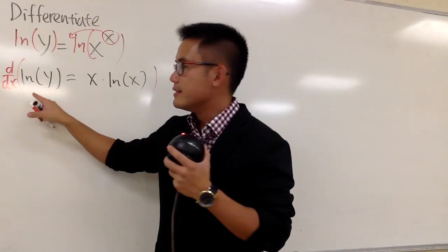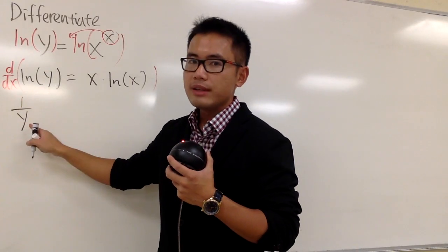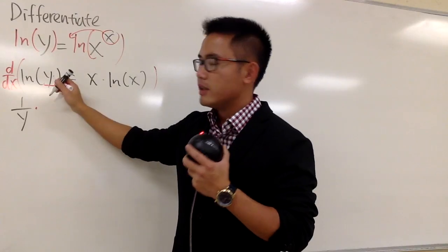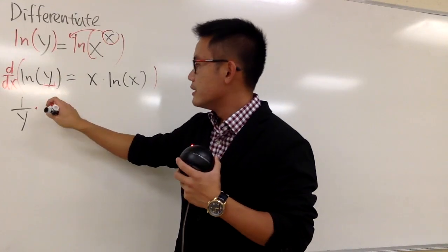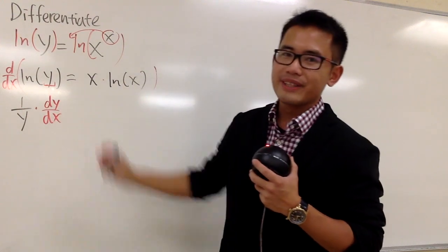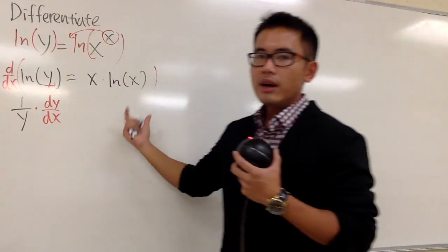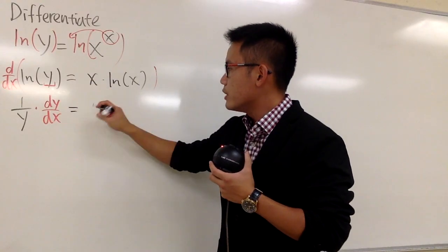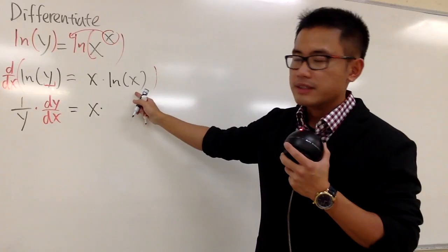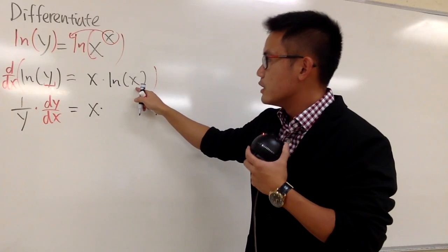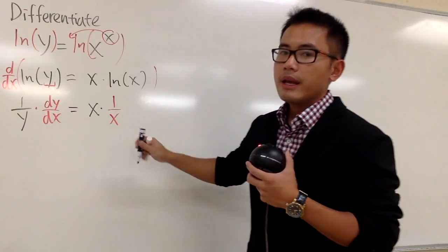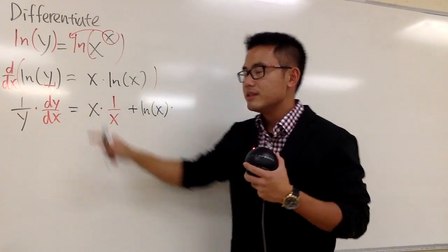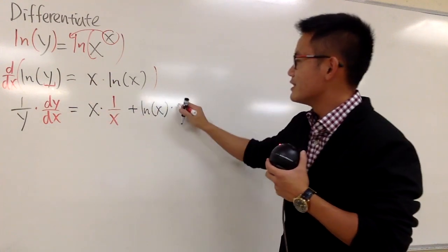The derivative of ln y is going to be 1 over y — 1 over the inside, which is y. Furthermore, we know y is a function of x, so by the chain rule, we have to multiply by the derivative of y with respect to x — in other words, multiply by dy/dx. Now on the right-hand side, we use the product rule: keep the first function, which is x, and multiply by the derivative of the second. The derivative of ln x is just 1 over x. Then add the second function, which is ln x, and multiply by the derivative of the first. The derivative of x is just 1.